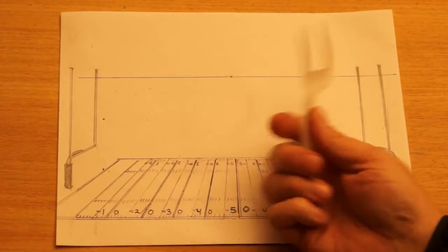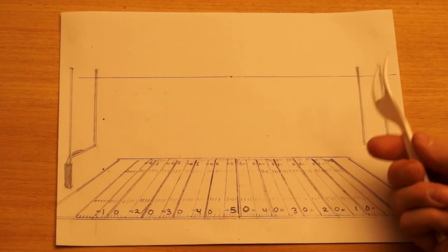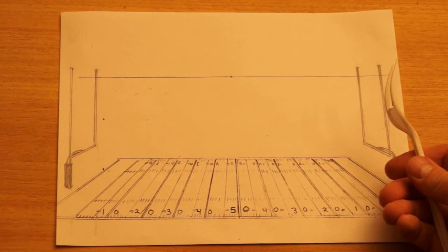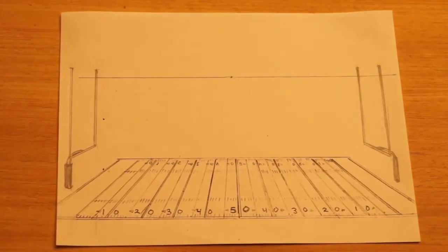As you can see, the goal posts do look a lot like a fork with the middle tines missing. Go ahead and clean up your drawing. Add color if you'd like to. And this is our drawing for today, football goalpost.